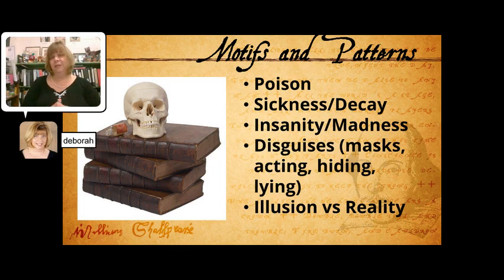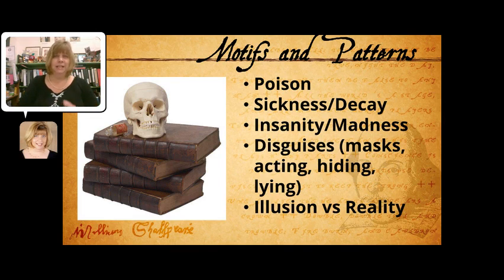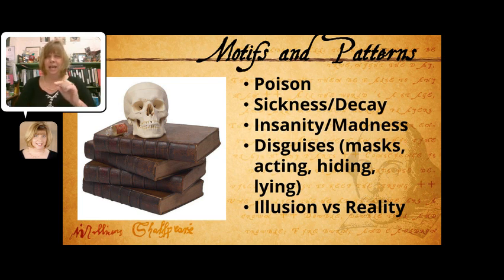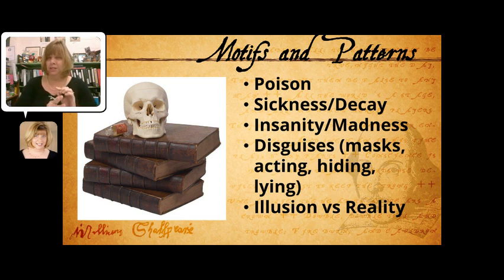Lastly, there are a couple of motifs and patterns to watch out for as you're reading. The first is the idea of poison — mentioned a lot in terms of poisoning people's feelings, and there's some literal poison in the play as well. The second is the idea of sickness and, by extension, decay — the idea that something that used to be beautiful is now rotting away. You'll see those images throughout as the characters speak.